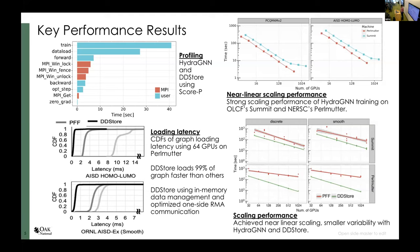In distributed deep learning training, synchronization stragglers hurt performance — a single straggler can delay everything. The DDStore memory-based approach, not using the file system, maintains low variability. We worked with colleagues John Hyun and Khalid, who are experts in performance analysis, and profiling results show we have less variability across multiple training processes.